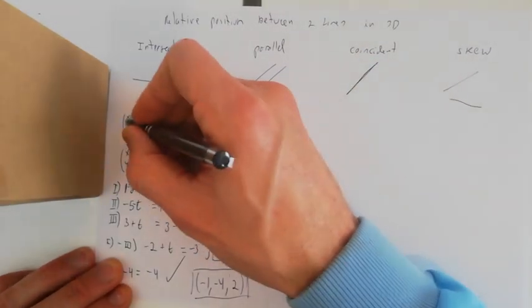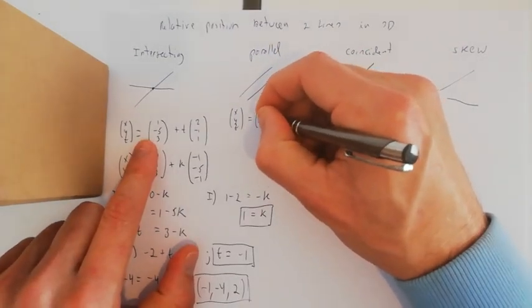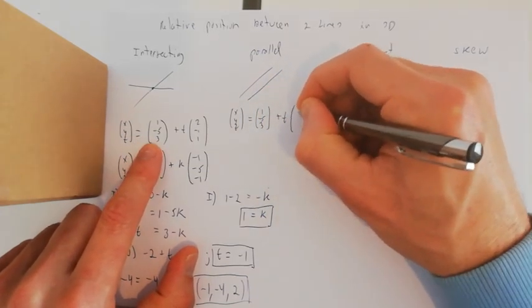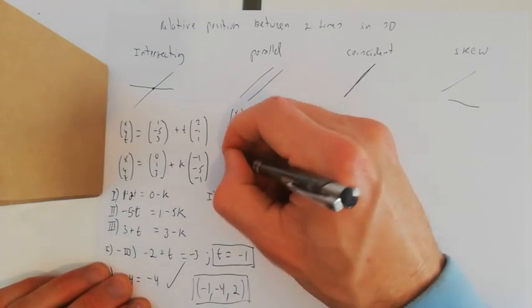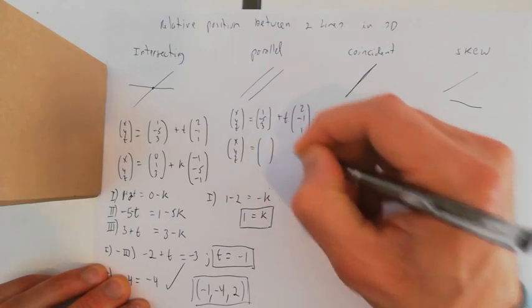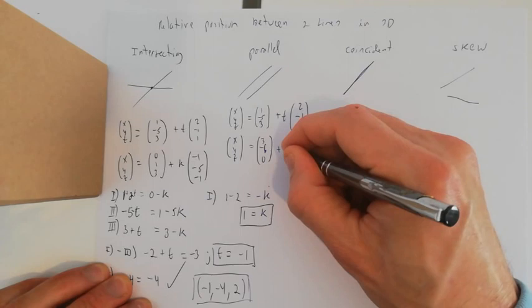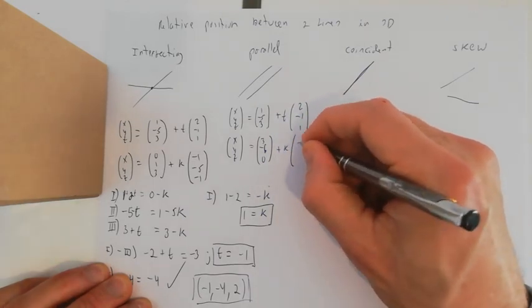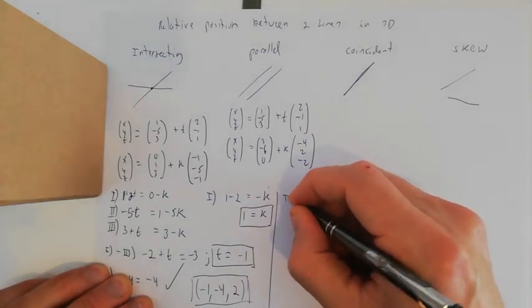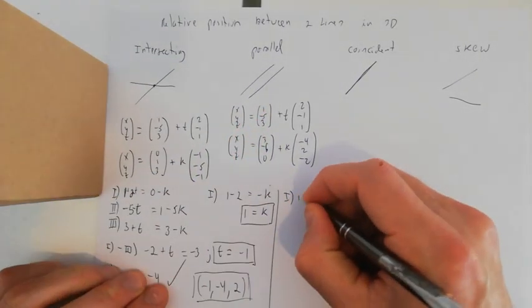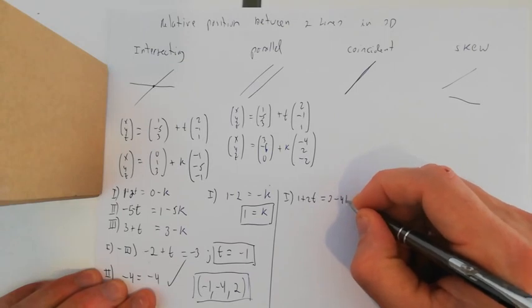Now let's see an example of two parallel lines. Line 1 is the same: (x, y, z) = (1, −5, 3) + t(2, −1, 1). The second line is (x, y, z) = (3, −6, 0) + k(−4, 2, −2). Writing the system: equation 1 is 1 + 2t = 3 − 4k.